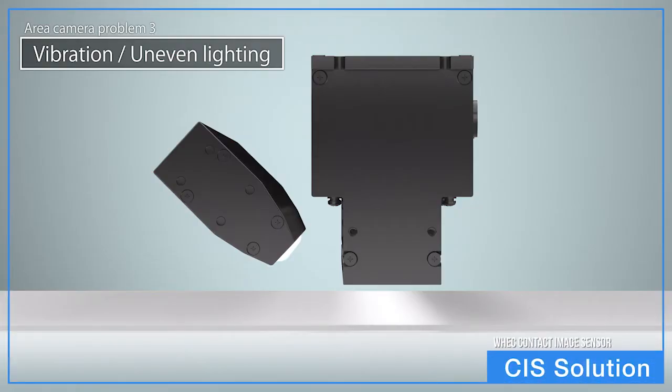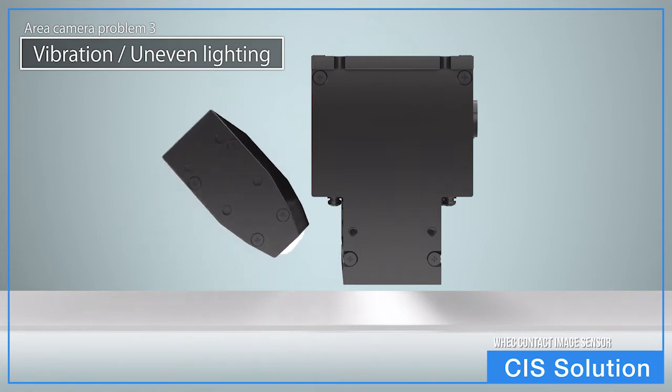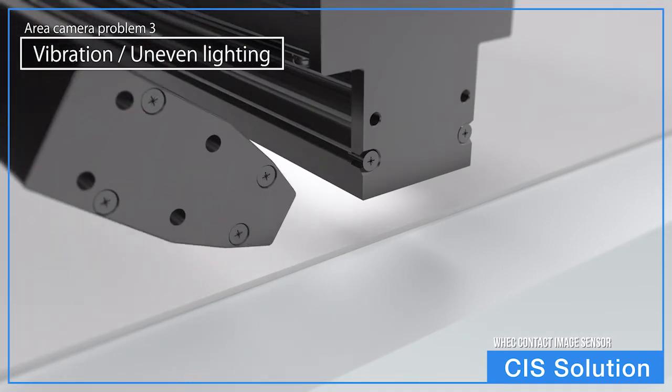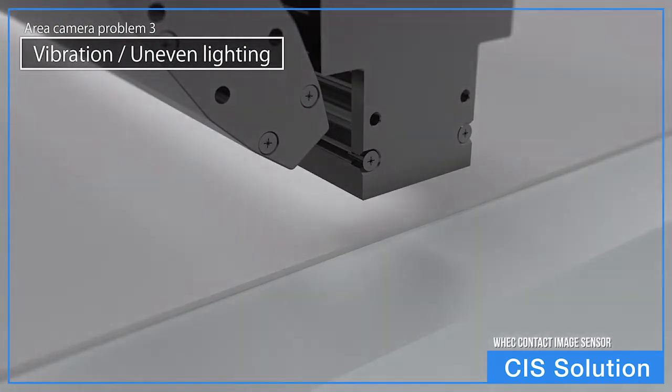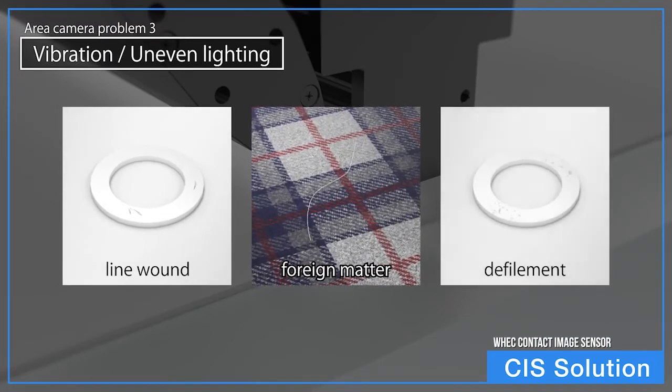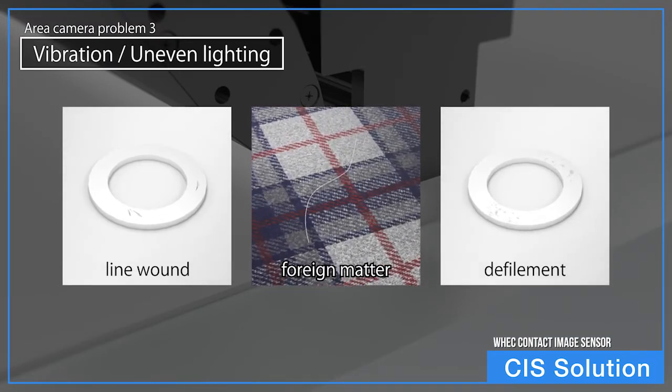However, with CIS, the light source is close to the imaged object, and the use of linear lighting prevents lighting unevenness. The angle of the light source can be adjusted freely, making it possible to detect minute defects such as small linear flaws, contaminants, or dirtiness.